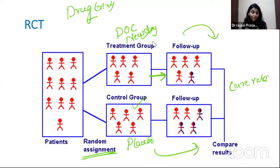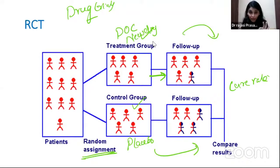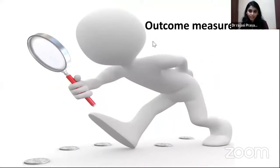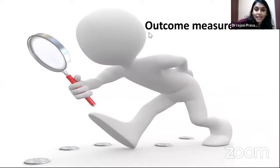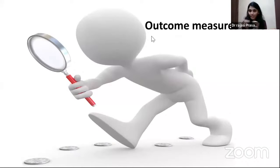The third terminology is number needed to treat — NNT. This is the definition: the minimum number of patients that need to be given the new drug to get one extra cure compared to the old drug. The question is asking: what is the minimum number needed to treat to get one additional cure compared to the control drug?